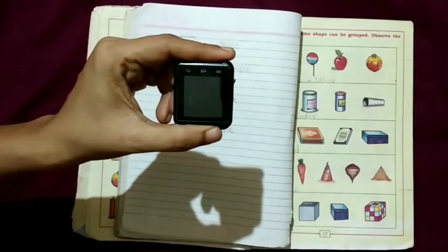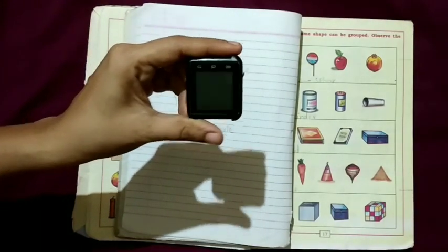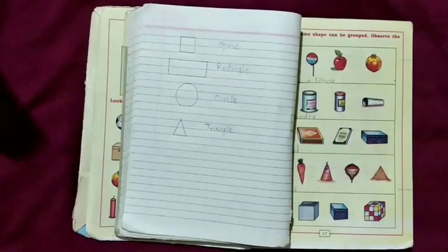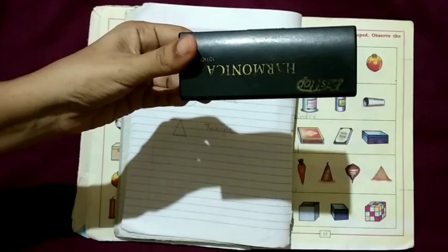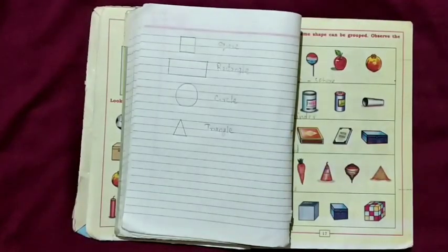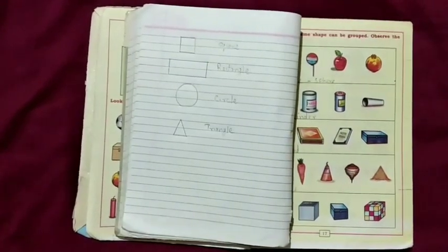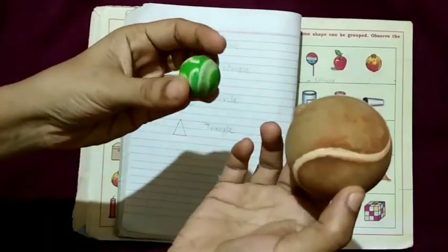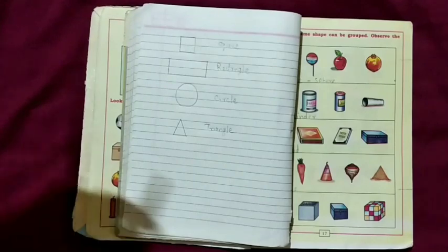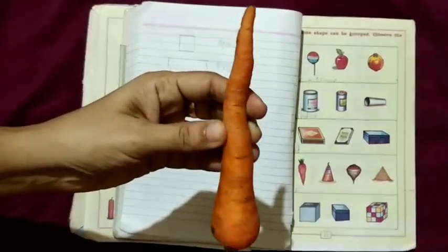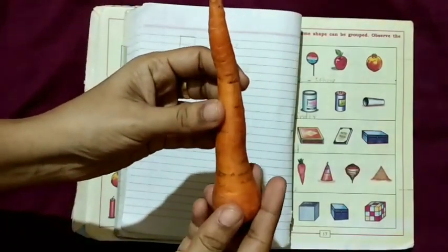This is the example for cube. This is the example for cuboid. These balls are the example for sphere. This carrot is the example for cone.